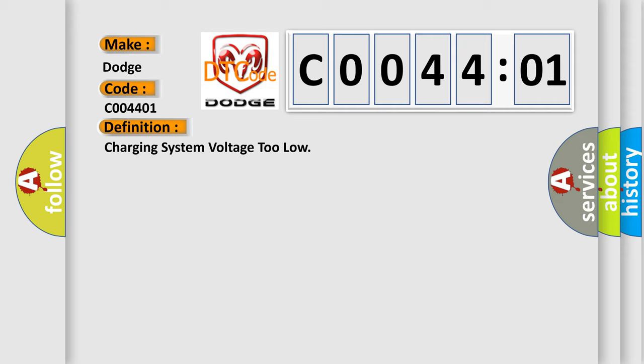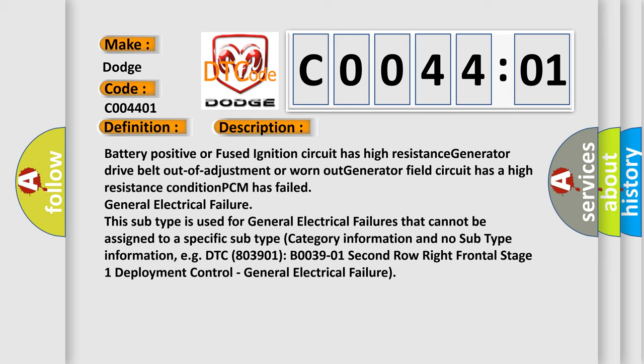And now this is a short description of this DTC code. Battery positive or fused ignition circuit has high resistance, generator drive belt out of adjustment or worn out, generator field circuit has a high resistance condition, PCM has failed, general electrical failure.